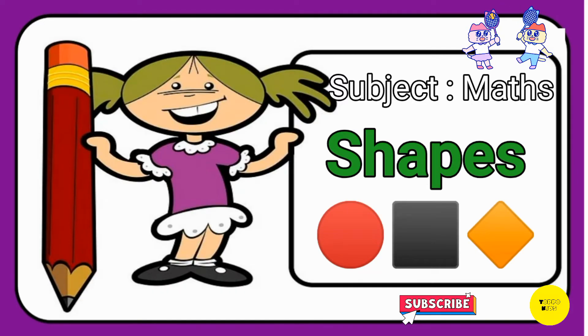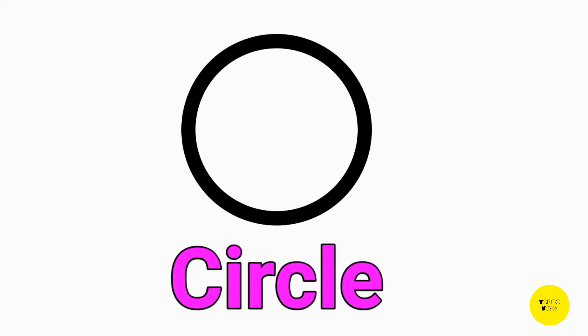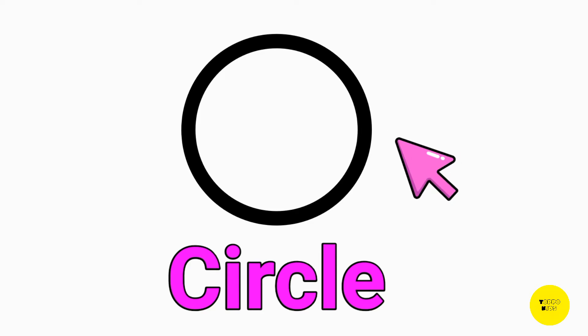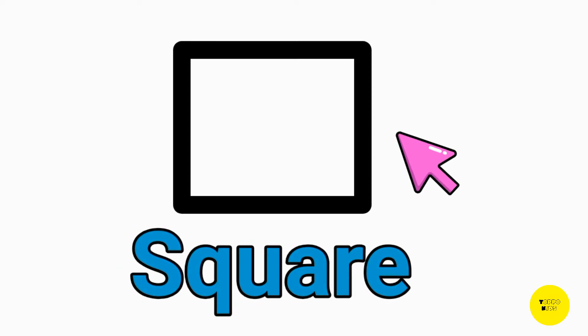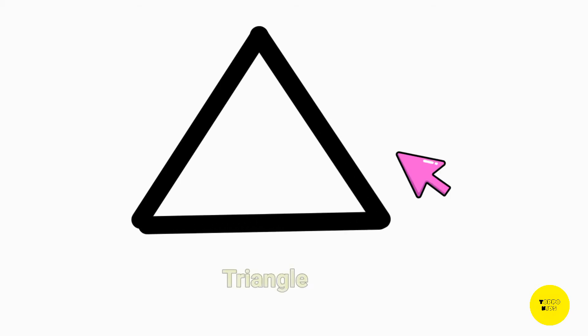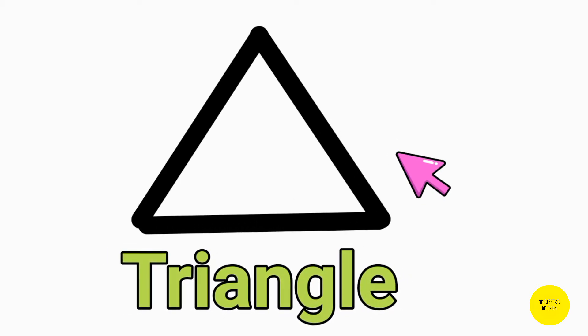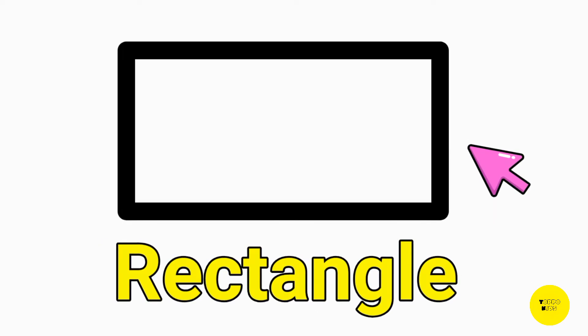Our next chapter is about shapes. This is a circle. This is a square. This is a triangle. This is a rectangle.